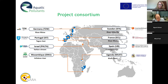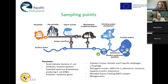We can compare surveillance data from different climate zones and under different conditions. Because we have so many different partners, it was very important to harmonize the methods at the beginning to truly compare our results. Our sampling points are illustrated here — we have taken many samples from surface water, different rivers, and from wastewater treatment plant influent and effluent.